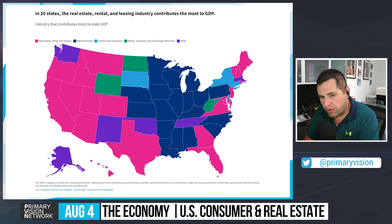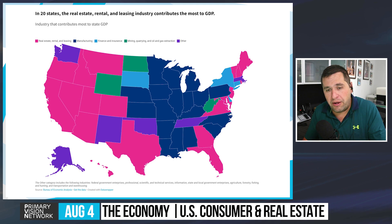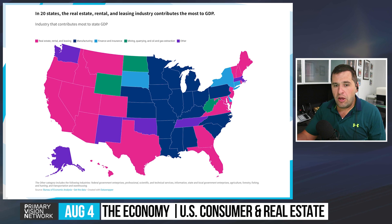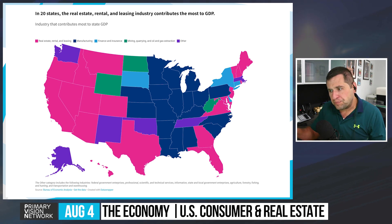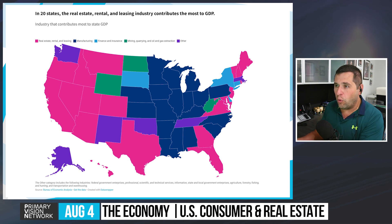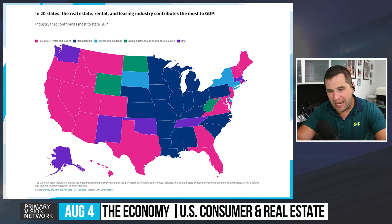In 20 states, real estate, rental, and leasing contribute the most to GDP. The West Coast and South are most exposed there, while Chicago and Philadelphia Fed surveys capture manufacturing. The biggest concern is the West Coast, where migration is moving out and pressure continues. States like Arizona, Florida, Georgia, and Tennessee have seen migration inflows, but that's now slowing — which is why real estate is so important when determining when we enter a recession.